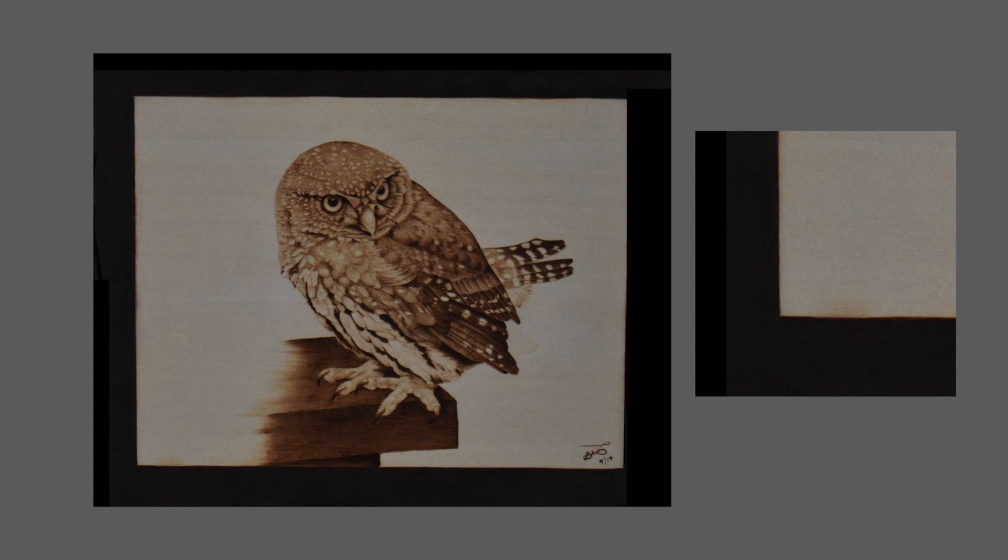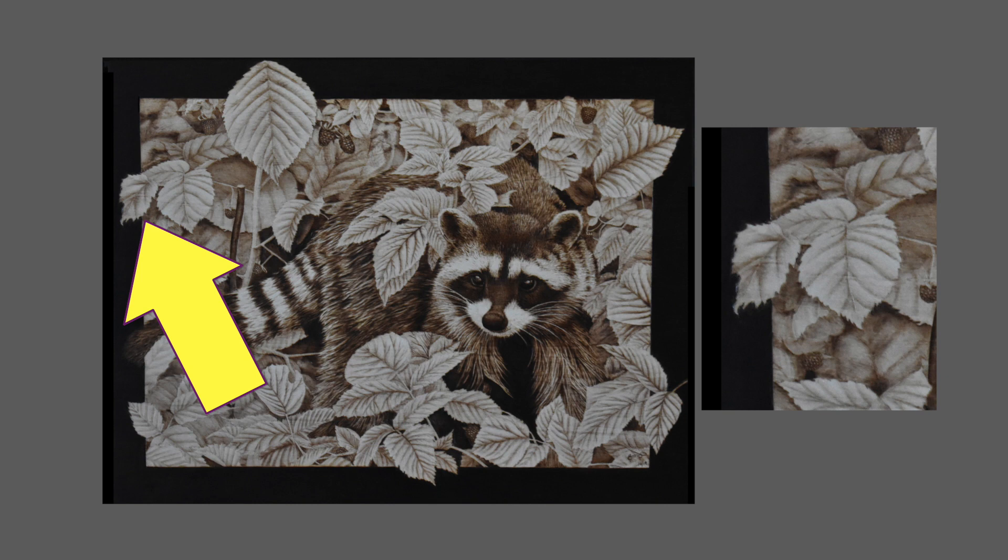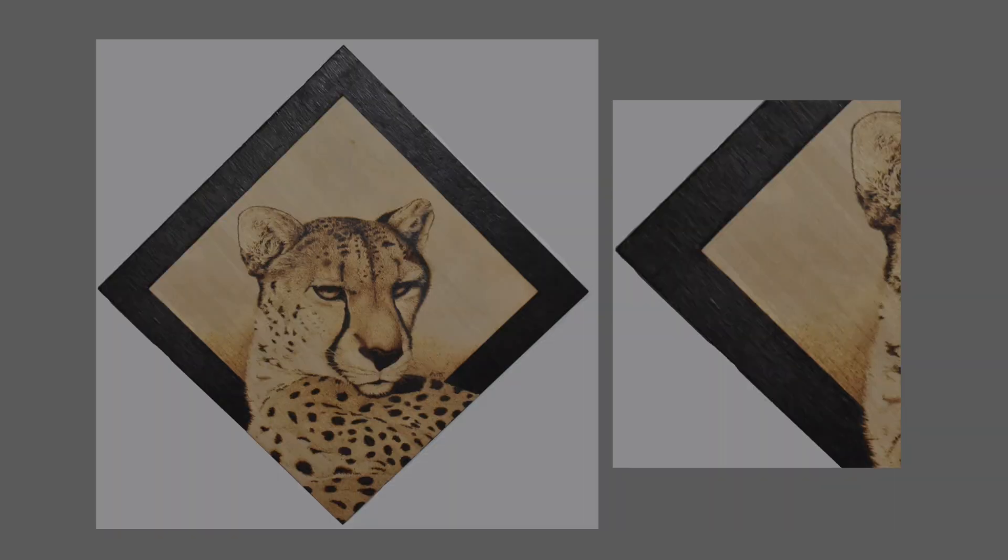With the Pygmy Owl I did a flat or solid border. I did the same thing with the Raspberry Bandit but I overlapped some of the leaves onto the border. With the Cheetah I turned the board diagonally to give it a unique look.